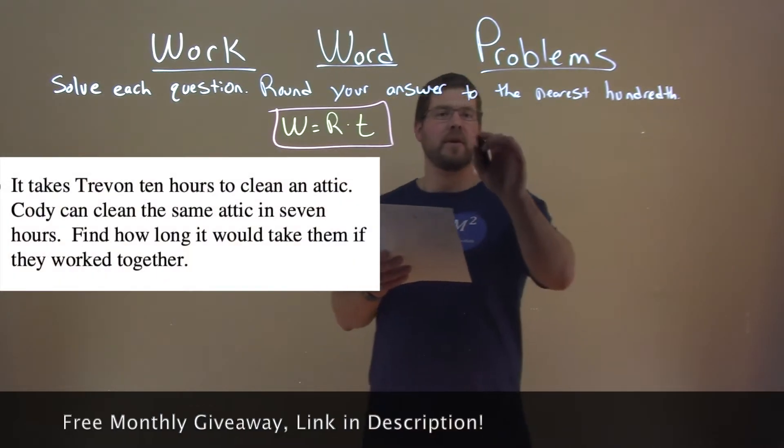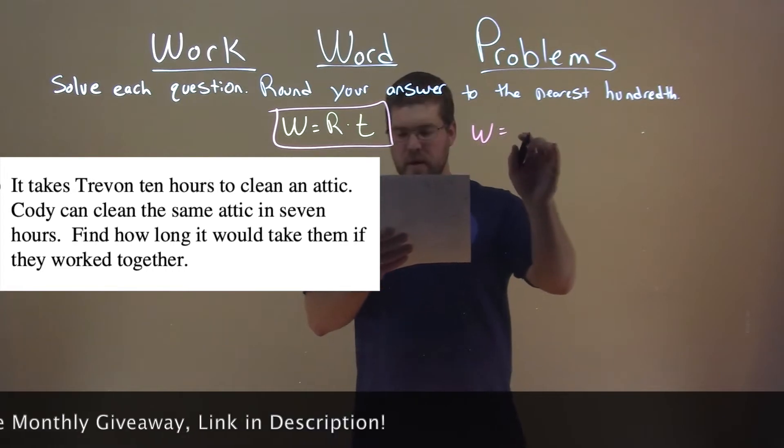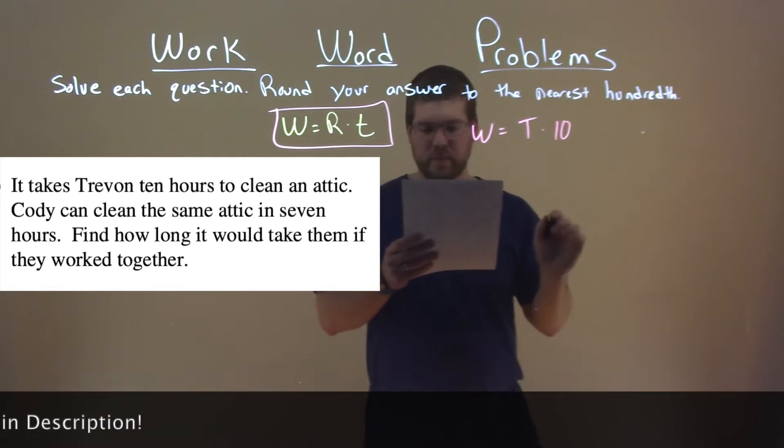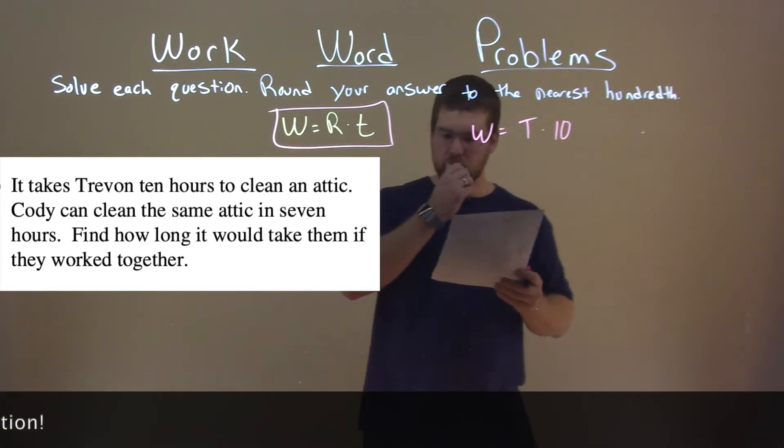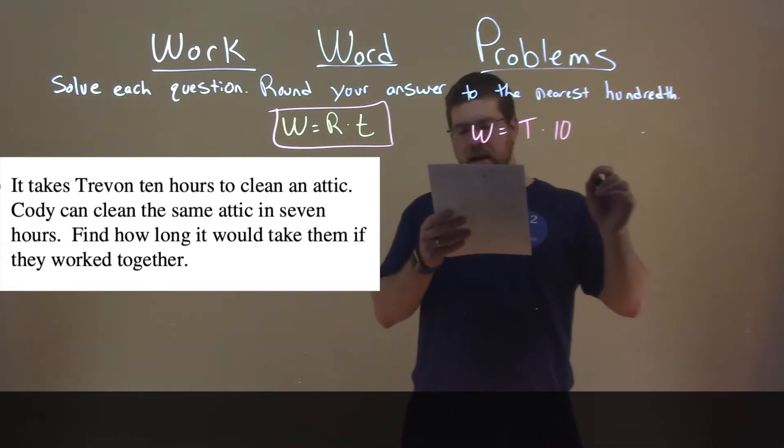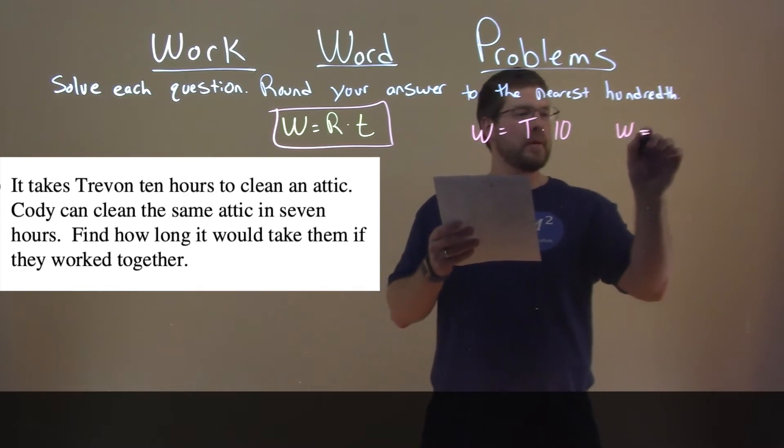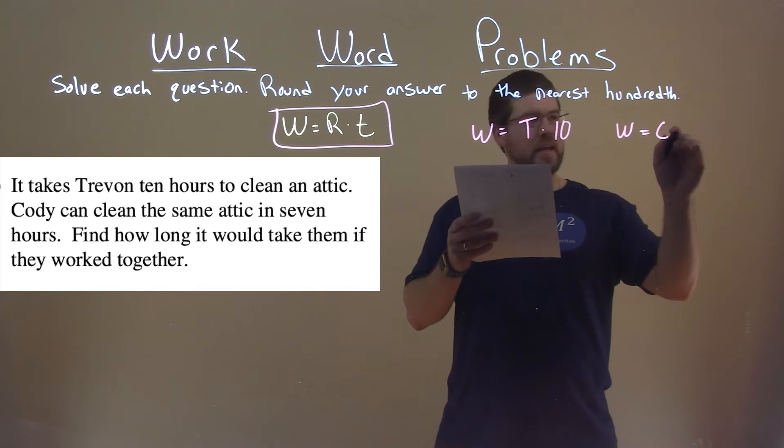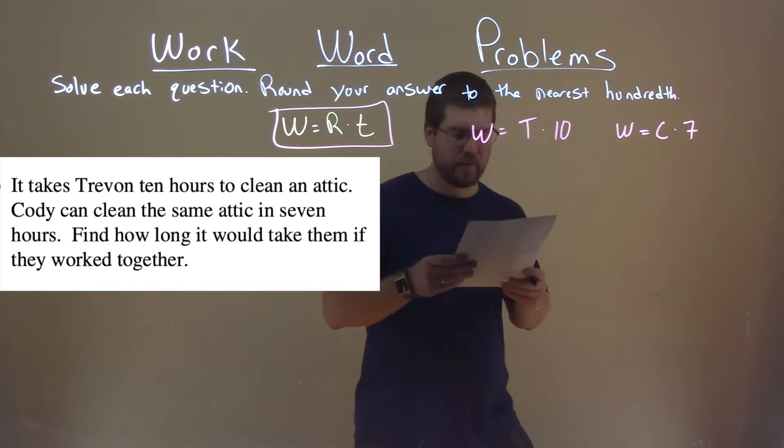So one thing we know here, our work here is equal to Trevon's work rate times 10, for the 10 hours so they can do that work and that same job Cody can do, so whatever his work rate is C, he can do that in seven hours.